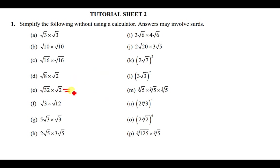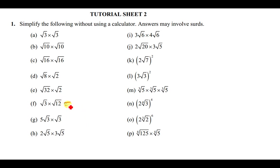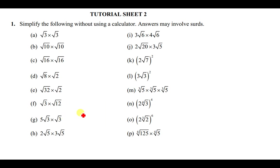√32 × √2 = √64 = 8. Then √3 × √12 = √36 = 6. I'm moving quickly because these are straightforward — I'll slow down where questions become more complicated.